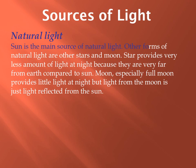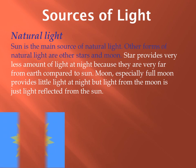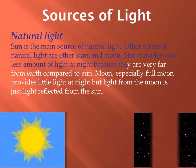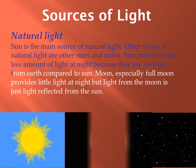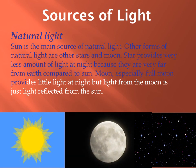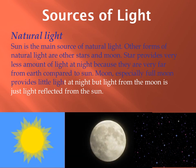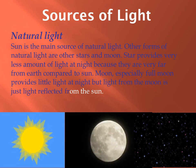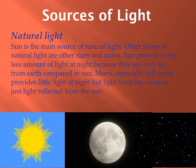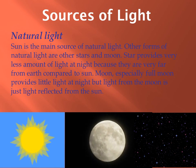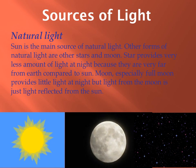Natural light. Sun is the main source of natural light. Other forms of natural light are other stars and moon. Stars provide very little light at night because they are very far from Earth compared to the sun. The moon, especially full moon, provides a little light at night, but light from the moon is just light reflected from the sun.